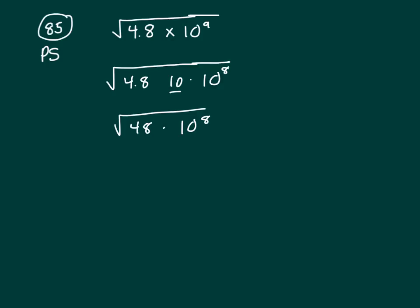Now 48, think about, we're thinking about square roots. The square root of 48, or 48 is about what? It's about 49, isn't it? So let's switch it. So what's the square root of 49? 7.